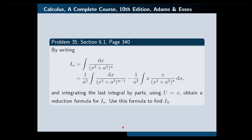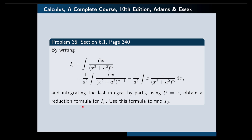Hello, in this video I'm going to solve the following problem. By writing I sub n, which is defined to be this integral, and integrating the last integral by parts using u equals x substitution, obtain a reduction formula for I sub n. Use this formula to find I sub 3. It would be a good idea if you pause the video at this point and try to solve the problem yourself first.